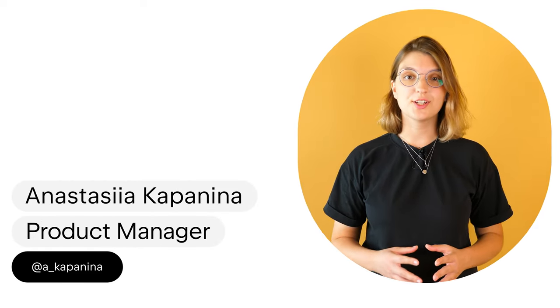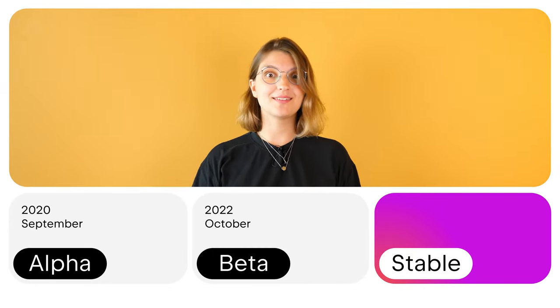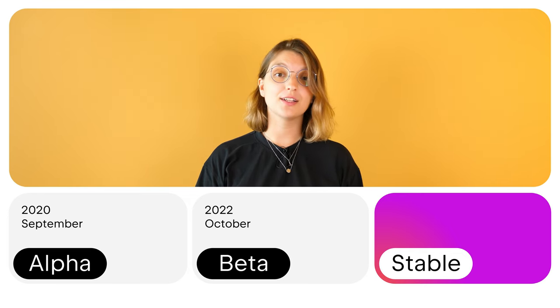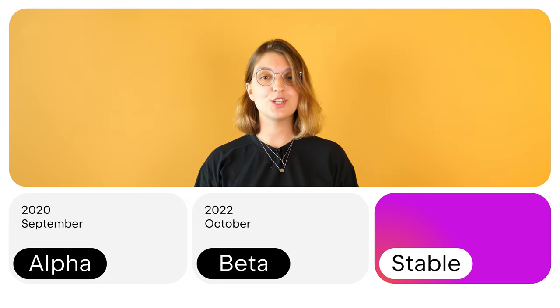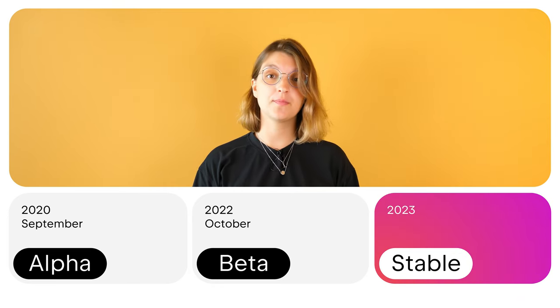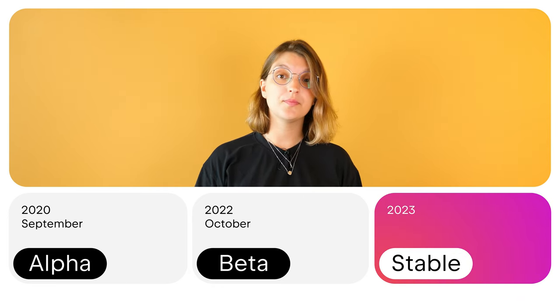Kotlin Multiplatform Mobile stabilization opens a lot of roads for our community. In the next couple of years we will hear more and more success stories from companies and see a lot of popular libraries migrating to Multiplatform. Our team will do everything to support these efforts. After beta there will be a stable release — we are pretty confident that Kotlin Multiplatform Mobile will reach that milestone in the year 2023. But we don't want to stop there. We have a lot of exciting ideas for library offerings that go way beyond simple stabilization.